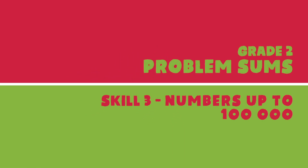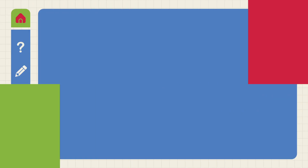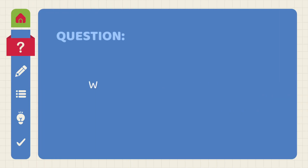Problem Sums: Numbers up to 100,000. What are 17 tens and 96 ones?